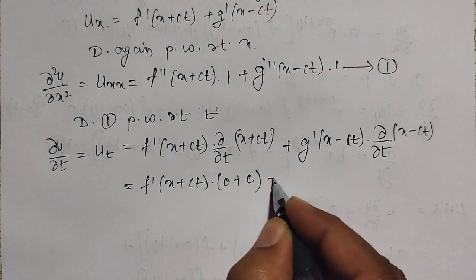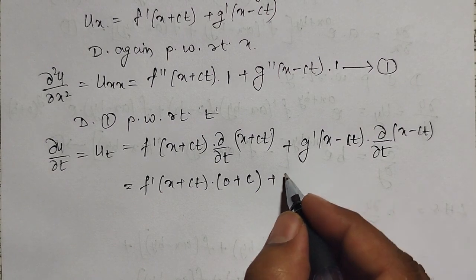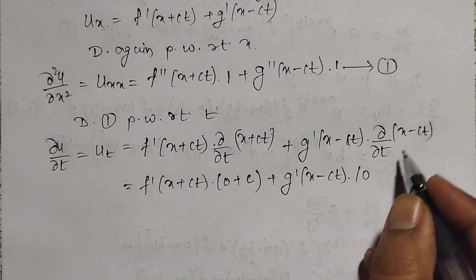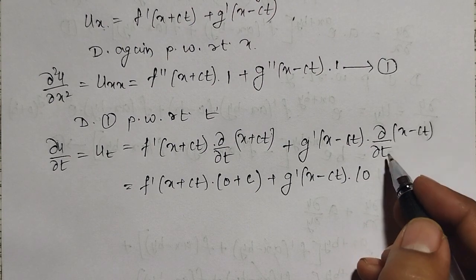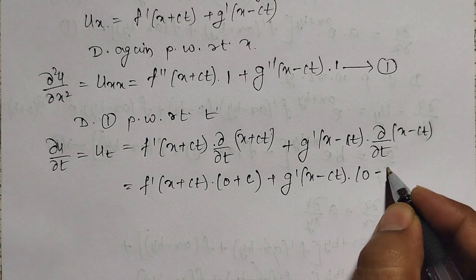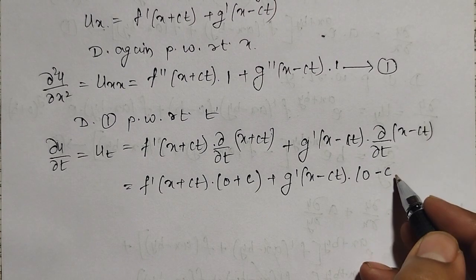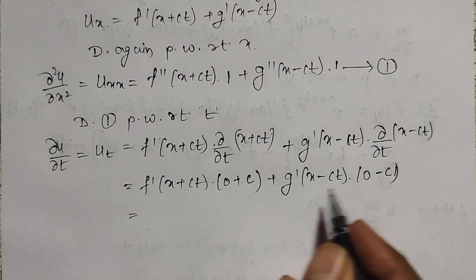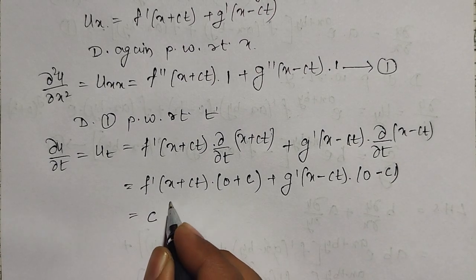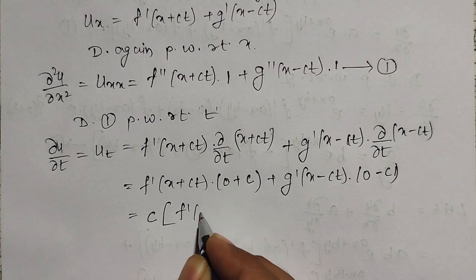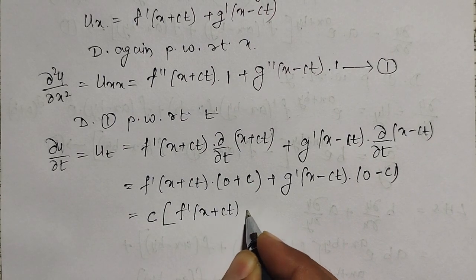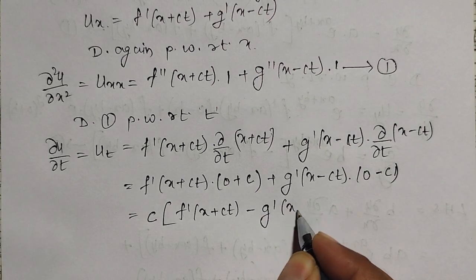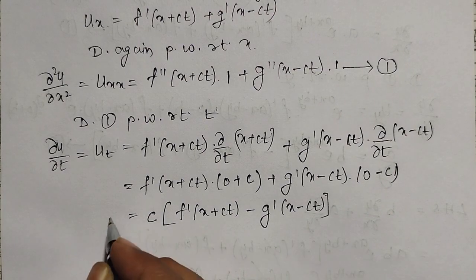The partial derivative of (x - ct) with respect to t is 0 - c = -c. So u_t = c · f′(x + ct) - c · g′(x - ct). Taking c as a common factor, u_t = c · [f′(x + ct) - g′(x - ct)]. This is the first order partial derivative with respect to t.